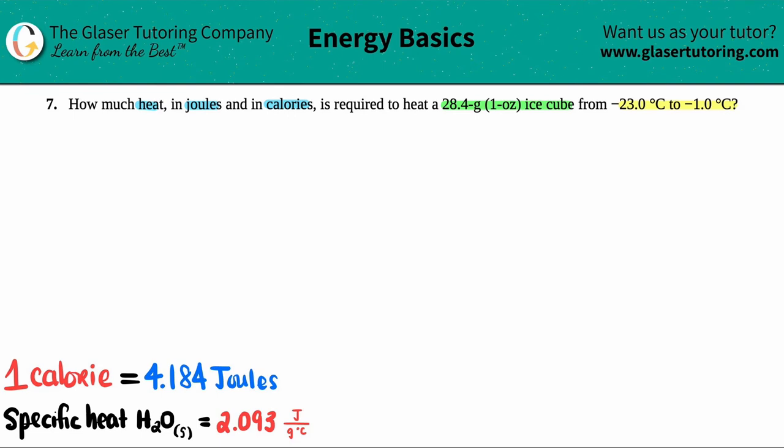It looks like they're asking for how much heat is required. We need to have it in joules and in calories, but they gave us a mass (a gram value is a mass, so we have an m here) and we have two temperatures. We have an initial temperature and a final temp—we're going from negative 23 degrees Celsius to negative one degree Celsius. So basically, if they're asking for a heat value and they give you a mass and change in temps, we're dealing with the q formula.